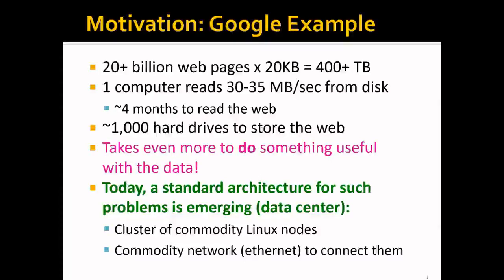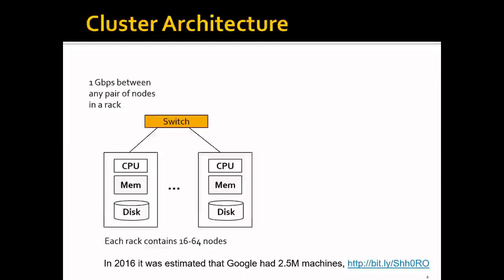So today, to handle this kind of problem, the standard architecture that is emerging is called a data center. A data center usually consists of a cluster of commodity Linux nodes and commodity network to connect them. Typically, we use a stack of 16 to 64 commodity Linux nodes in a rack, with a one gigabit per second switch to connect all the machines in a single rack.